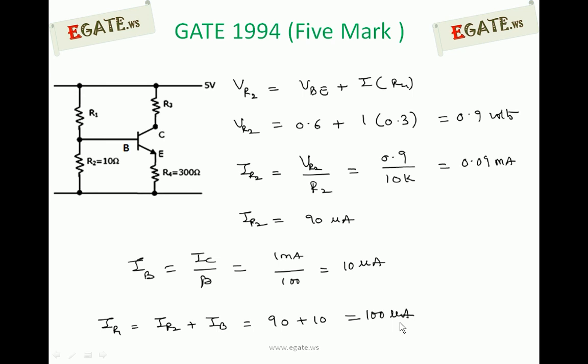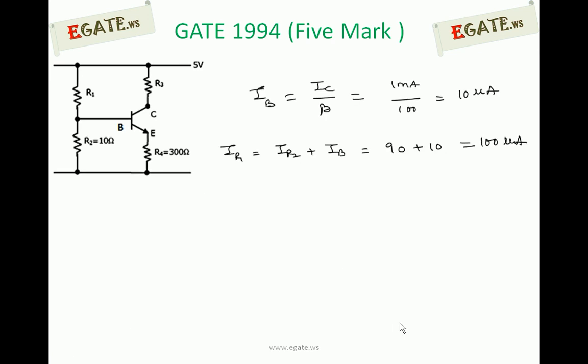After knowing the current flowing through it, you can calculate R1. R1 is nothing but voltage across R1, that is 5 minus VR2, that is voltage base. 5 minus 0.9 divided by 100 microamps, which is nothing but 4.1 by 100 microamps. So it is 41 kilo ohms.